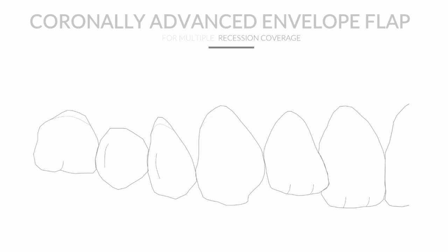The first step is to determine the oblique incision's position. We measure the depth of recession on the first tooth to be treated — in the lateral approach, this is the canine. Once we record this value, we transpose it to the papilla's margin, measuring upward from the tip of the anatomical papilla and adding 1 mm. This gives us the end point of the oblique incisions.